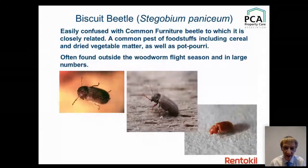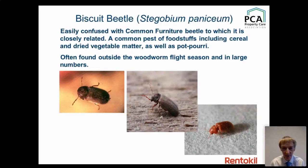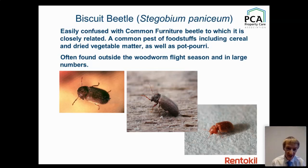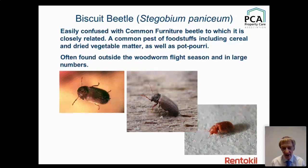Worth mentioning biscuit beetle: if you get called out and find hundreds of beetles on a windowsill outside April–September, double-check it's not biscuit beetle (Stegobium). When side by side they're easy to distinguish: biscuit beetle has a round head, while common furniture beetle has a cavalier helmet shape. You also don't normally see that quantity of common furniture beetle running around at once.